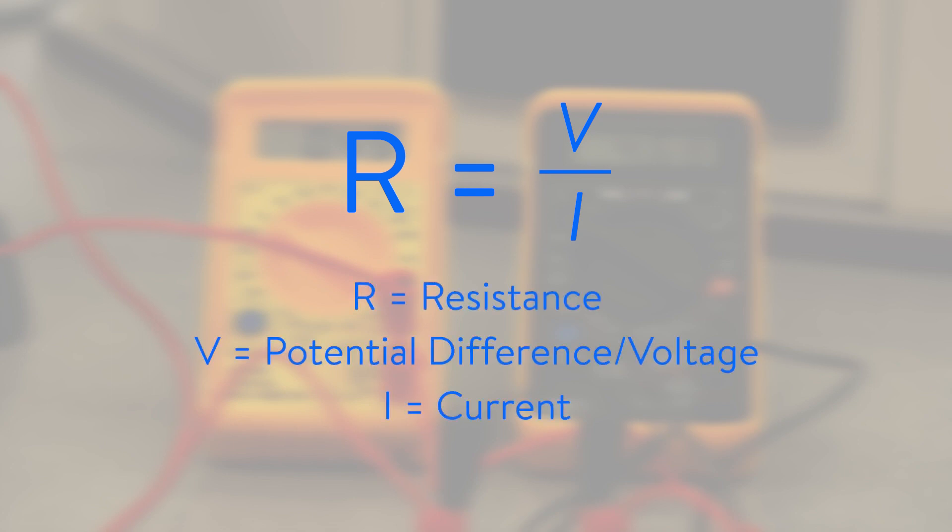Using the equation R equals V divided by I, where R is the resistance, V is the potential difference or voltage and I is the current, work out the resistance of resistors 1 and 2.